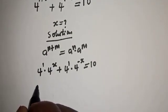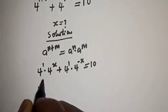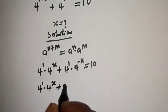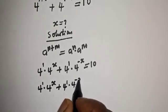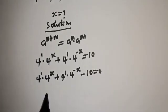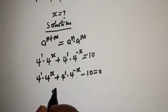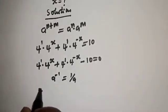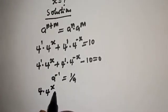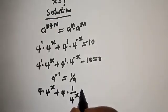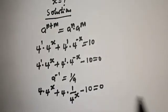Let's bring the 10 to this side. We have 4 raised to power 1 multiplied by 4 raised to power x, plus 4 raised to power 1 multiplied by 4 raised to power minus x, minus 10 is equal to 0. Take note that if you have a raised to power minus 1, this is equal to 1 over a. So we have 4 multiplied by 4 raised to power x, plus 4 multiplied by 1 over 4 raised to power x, minus 10 is equal to 0.